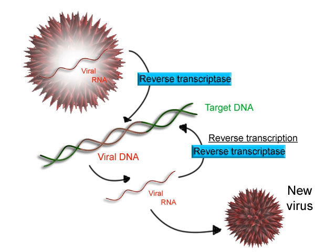One strand of the DNA, the template strand, is used as a template for RNA synthesis. As transcription proceeds, RNA polymerase traverses the template strand and uses base-pairing complementarity with the DNA template to create an RNA copy. Although RNA polymerase traverses the template strand from 3' to 5', the coding strand and newly formed RNA can also be used as reference points, so transcription can be described as occurring 5' to 3'. This produces an RNA molecule from 5' to 3', an exact copy of the coding strand except that thymines are replaced with uracils, and the nucleotides are composed of a ribose sugar where DNA has deoxyribose in its sugar-phosphate backbone. mRNA transcription can involve multiple RNA polymerases on a single DNA template and multiple rounds of transcription, so many mRNA molecules can be rapidly produced from a single copy of a gene.